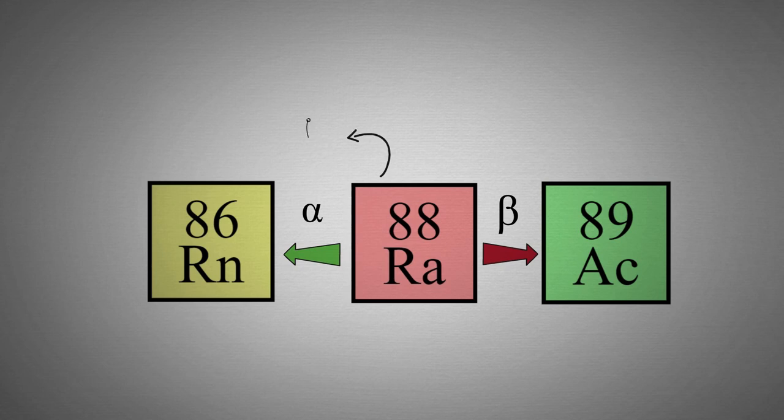We now know that alpha decay is caused by the spontaneous emission of a helium atom from the nucleus, which we sometimes call an alpha particle, and beta decay is caused by the spontaneous emission of an electron from the nucleus, which we sometimes call a beta particle.